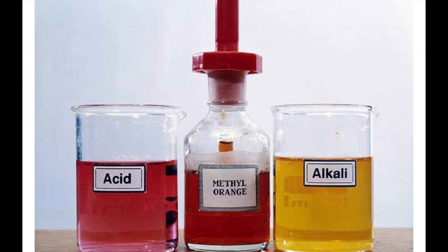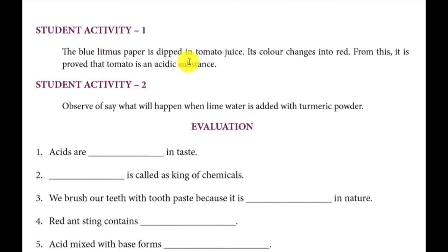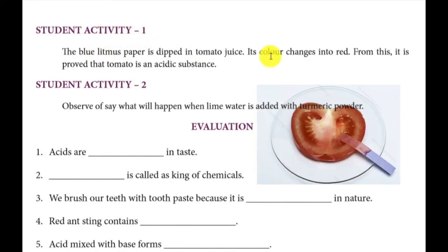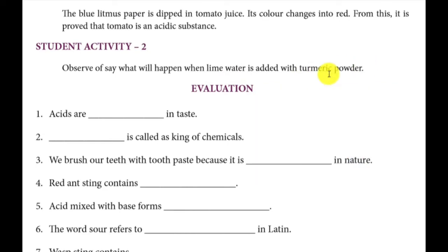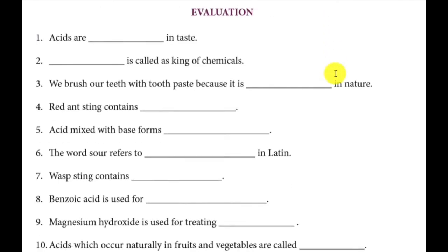Student activity one: blue litmus paper is dipped in tomato juice. Tomato juice contains acid and is sour in taste, so we observe the color changes to red. Activity two: what will happen when lime water is added with turmeric powder? Turmeric solution will react with the acid, so there will be no change in color.